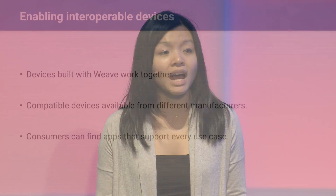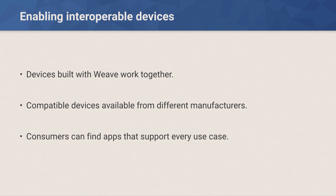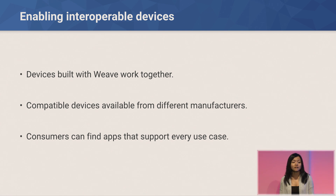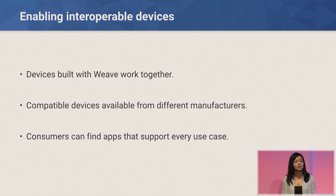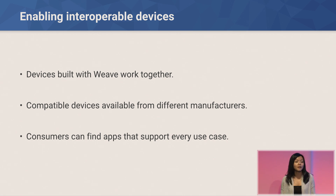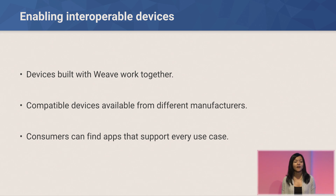Interoperability is one of the most important tenets of the Weave ecosystem. We want consumers to have confidence when they purchase a Weave device that it will work with all the existing Weave devices they already have. We want to make sure they have compelling and compatible choices from a wide range of device manufacturers. We actually expect device makers to challenge each other to build increasingly more compelling device experiences. The Weave mobile platform will enable them to easily interconnect not just their own devices but devices of their partners. We also anticipate that app developers will be able to add a lot of value and build unique experiences that further increase the value users get from their Weave devices.